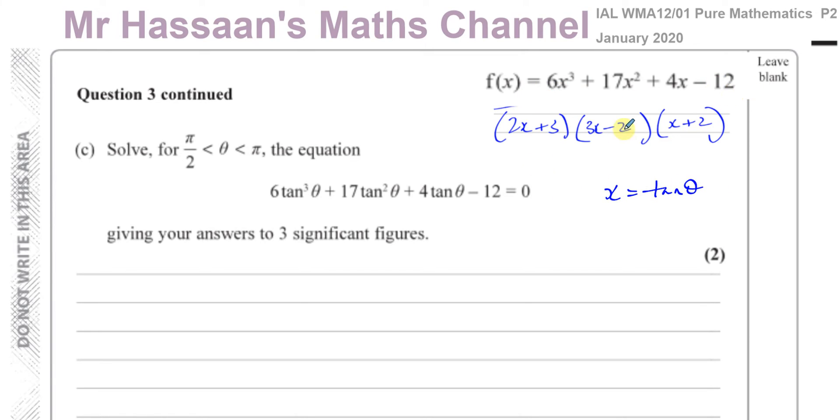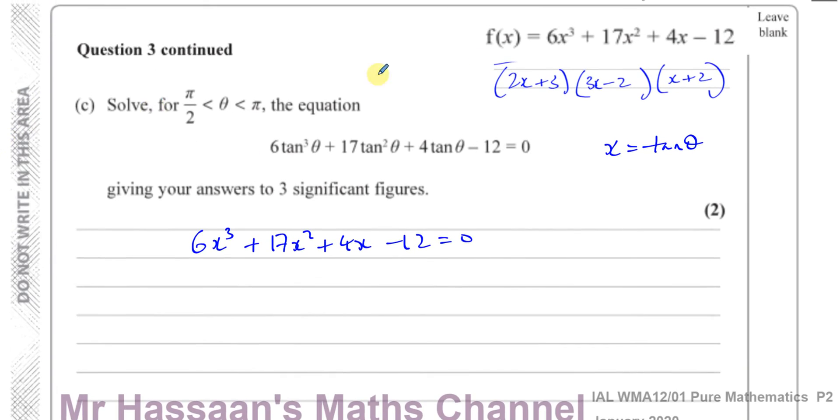So let me take this equation and solve it. Make it equal to 0 and solve it, and then replace what I get for x with tan theta. So you're going to have this equals 0. Now we're almost on the way of solving it because we've already factorized it in the last question. So you're going to have 2x plus 3 times 3x minus 2 times x plus 2 equals 0.